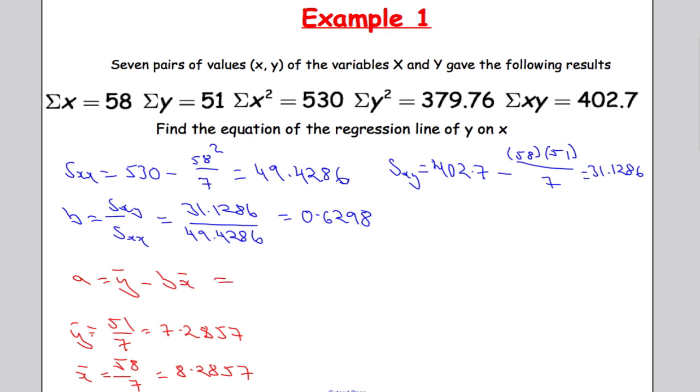And working out a. So we get y bar which is 7.2857 minus b which is 0.6298 all times by x bar, 8.2857. Again we're going to need the calculator for this.